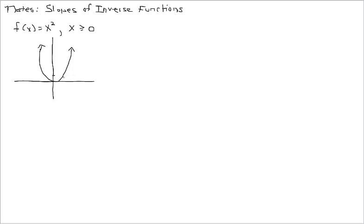So let's go ahead and consider some points that are on f of x equals x squared. For example, we can consider the point 1, 1, the point 2, 4, and let's look at 3, 9. And I know this isn't drawn to scale, but for what we need to do, this will be fine. So all three of these points belong to x squared.